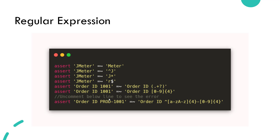Now let us see about regular expressions. The equals-tilde operator is the regular expression operator in Groovy, which will help you find a substring and perform operations on a string. Here we are validating whether the string 'JMeter' contains the string 'meter', whether it starts with the character 'J', ends with the character 'R' using the dollar symbol, and we also have a pattern to identify an order ID and the negation of the regular expression.